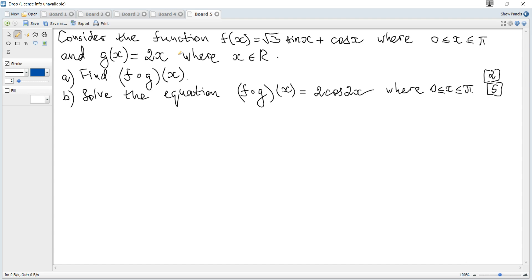Consider the function f(x) = √3sin(x) + cos(x) and g(x) = 2x. Find f of g of x. It's a composite function, and to be more clear, it looks like f(g(x)).